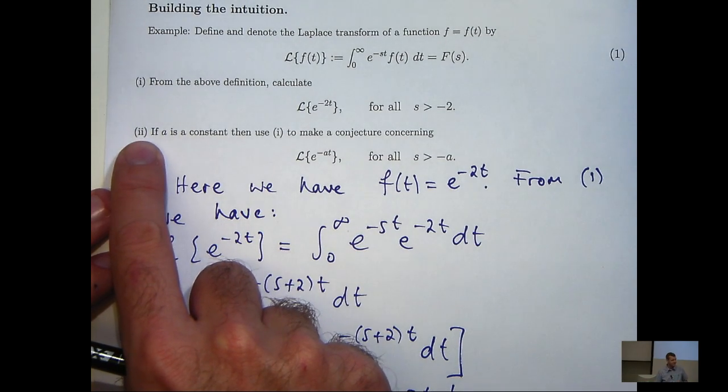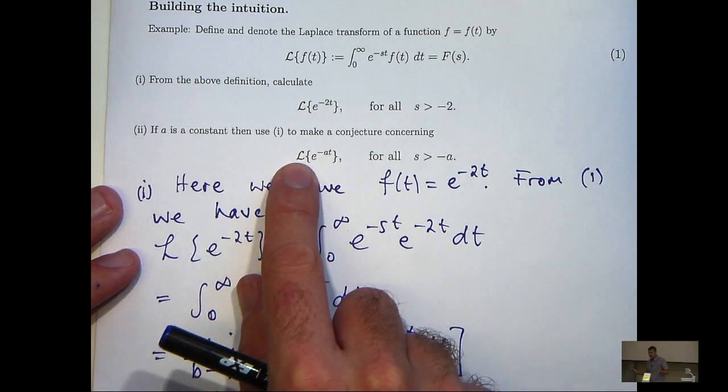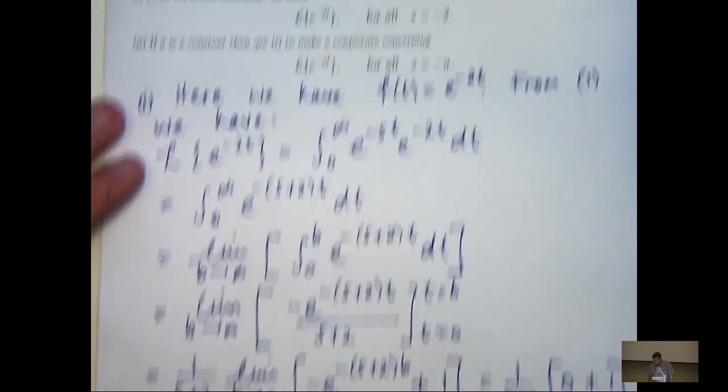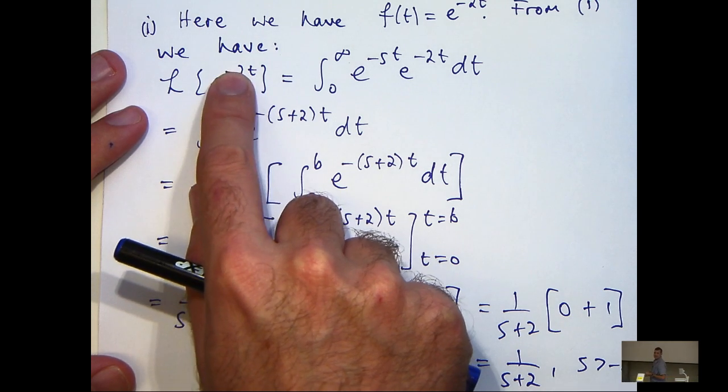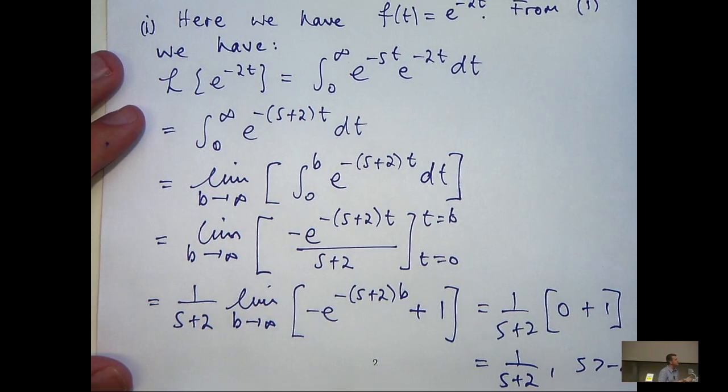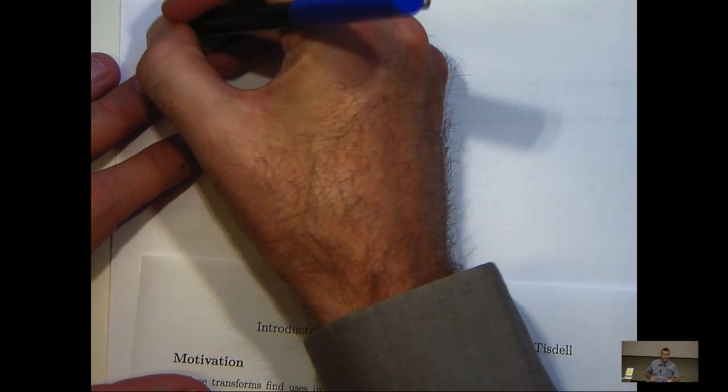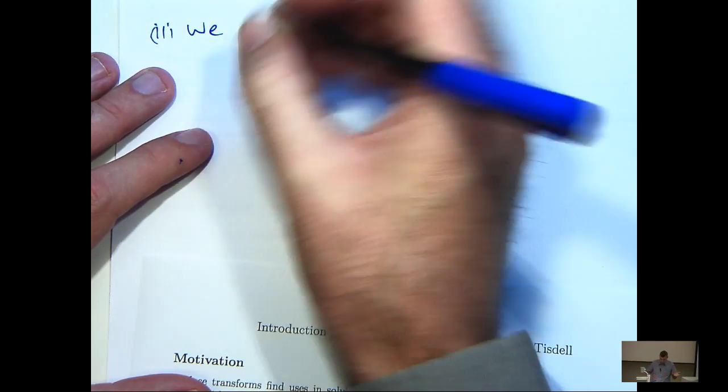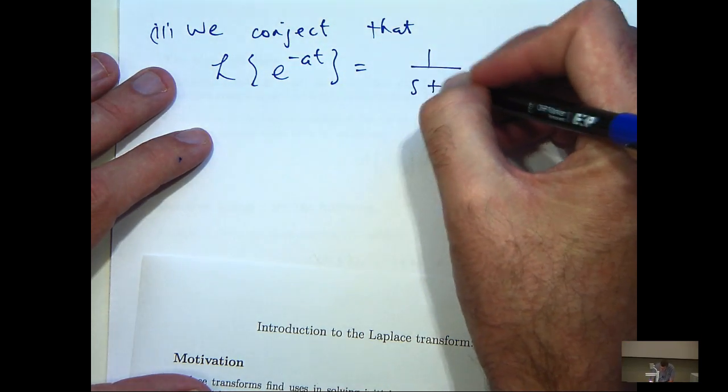In part double i, we're asked to solve a more general problem here. If a is a constant, then conject about what the Laplace transform of e to the minus at is. Well, you can see basically what we've done is the coefficient of t up here, we've changed the sign and it appears down here 1 on s plus 2. So, let's conject about that Laplace transform of e to the minus at is just 1 on s plus a.